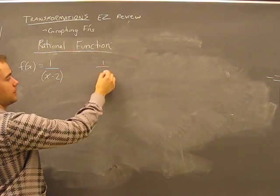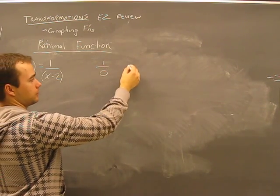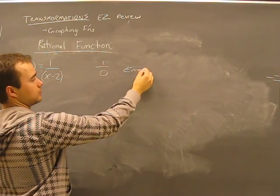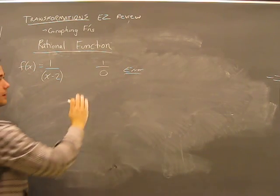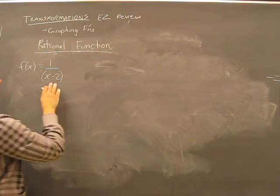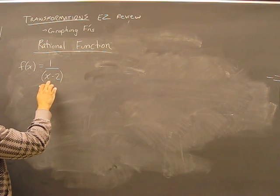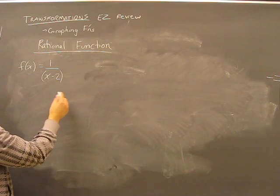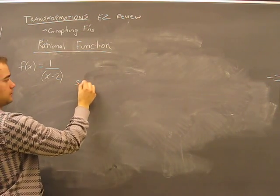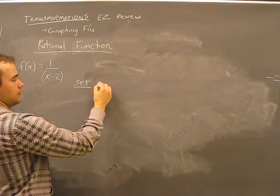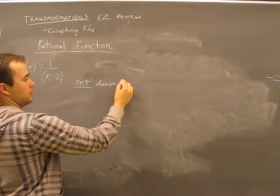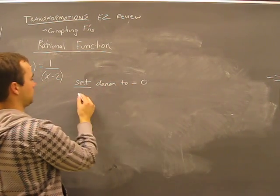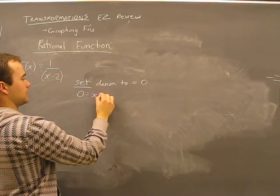First of all, if our denominator is zero, then we have an error. It doesn't work, we can't have that. So we have to make sure that we know that x is not going to be a value that will make it equal zero. How do we do that? Set the denominator to equals zero.